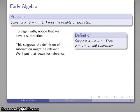Suppose I have a sum, a plus b equal to c, then I know that a is equal to c minus b. And conversely, which means that if I have a subtraction, I can immediately write down a corresponding addition.